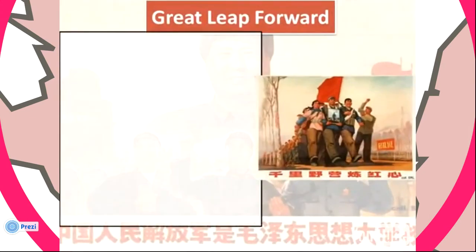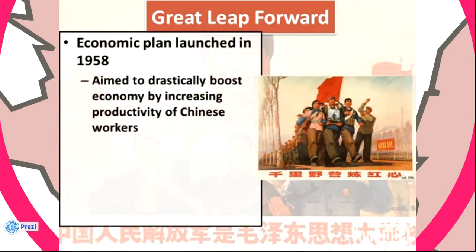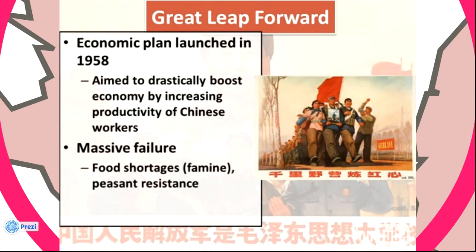The Great Leap Forward was one way Mao Zedong sought to achieve his Communist goals. Launched in 1958, it aimed at drastically boosting the Chinese economy by increasing worker productivity. Many Chinese workers had to abandon their other jobs to produce industrial goods like steel. Overall, the Great Leap Forward was a massive failure, resulting in food shortages and famine, and encountering peasant resistance. Over 20 million Chinese died from starvation as a result.